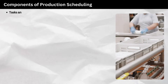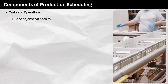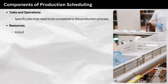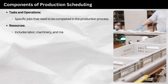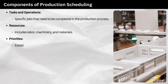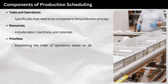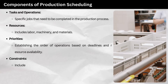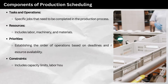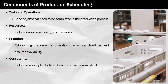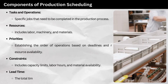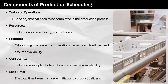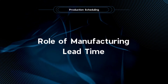Components of production scheduling: Tasks and operations — specific jobs that need to be completed in the production process. Resources — includes labor, machinery, and materials. Priorities — establishing the order of operations based on deadlines and resource availability. Constraints — includes capacity limits, labor hours, and material availability. Lead time — the total time taken from order initiation to product delivery.